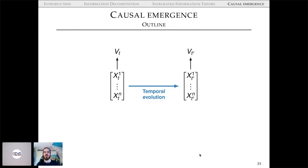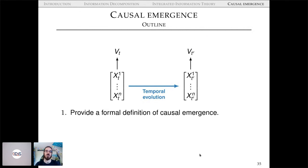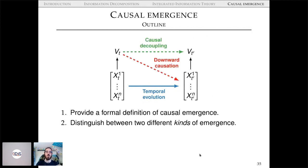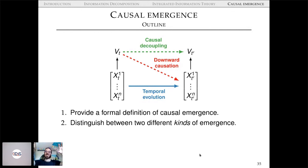We came up with this framework where system X has a potentially emergent feature V undergoing temporal evolution. Using Φ-ID and PID, we provide a formal definition of causal emergence and distinguish two kinds: downward causation, where an emergent supervenient property affects individual variables; and causal decoupling — the double synergy — where a collective property affects another collective property, like a statistical ghost affecting patterns without ever touching individual neurons.